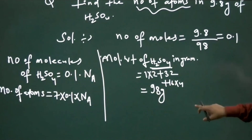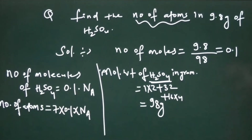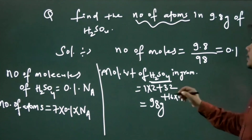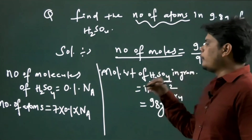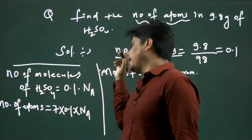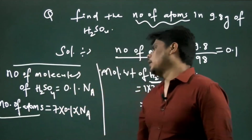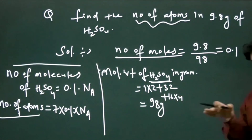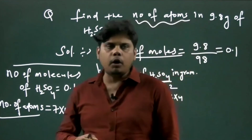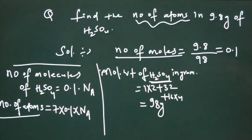The question is straightforward. To find number of atoms in 9.8 grams, the process is: first find moles, then find number of molecules from moles, then find number of atoms from molecules. This is the connection: moles → molecules → atoms.